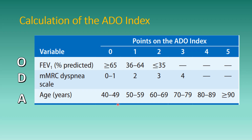Age ranges of 10 years: 50 to 59 scores 1, 60 to 69 scores 2, 70 to 79 scores 3, 80 to 89 scores 4, and more than 90 is given 5 points.